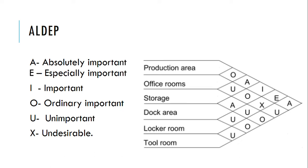There are six ratings we can give according to the importance of the department. They are A, E, I, O, U, and X. The full forms for these ratings are: A - absolutely important, E - especially important, I - important, O - ordinary important, U - unimportant, and X - undesirable.